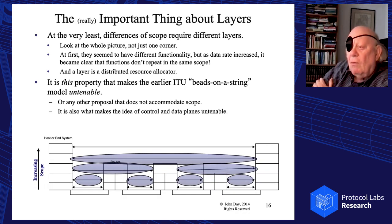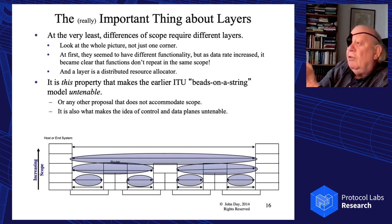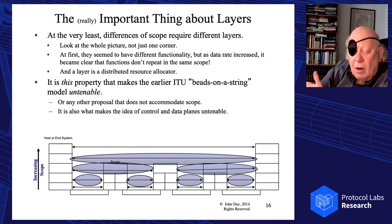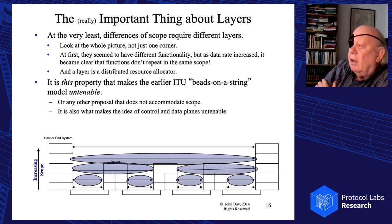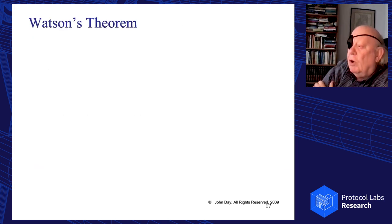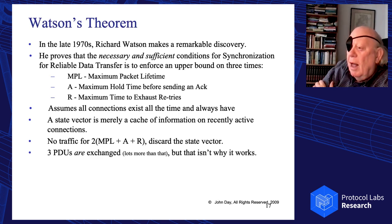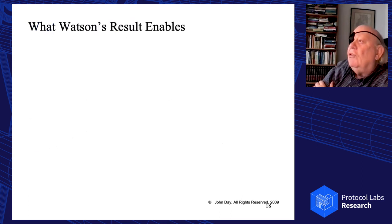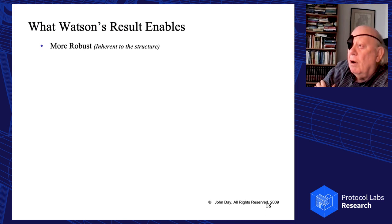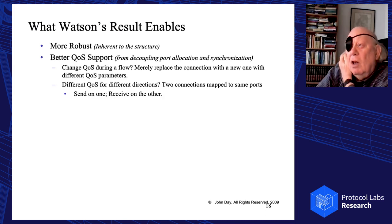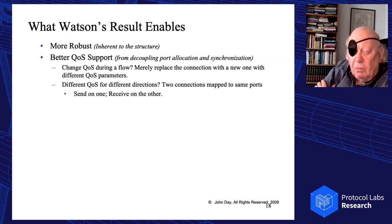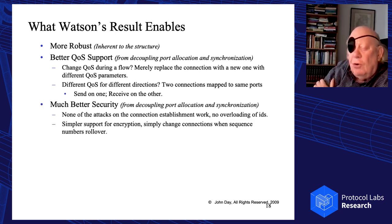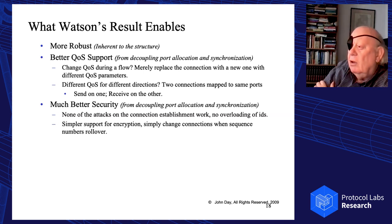ASN.1 divides things between an abstract syntax and encoding rules — it essentially makes a protocol invariant with respect to syntax. The procedures remain the same but the syntax sent over the wire changes. Applying all of that, what you end up with is really only one data transfer protocol with different policies and encodings. Data transfer protocols modify state internal to the protocol; application protocols modify state external to the protocol — they just differ by having different object models. Watson's theorem makes the protocol more robust, provides better quality-of-service support, and the attacks on TCP connection establishment don't work on a protocol built to Watson's specifications.